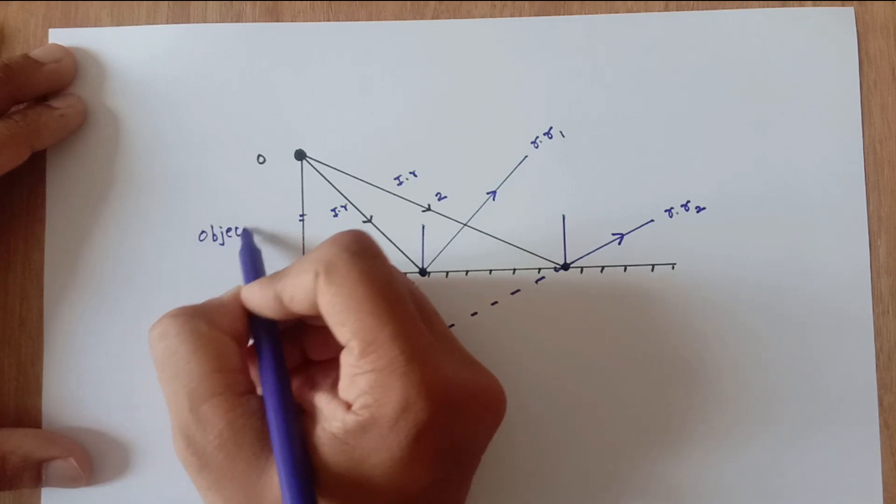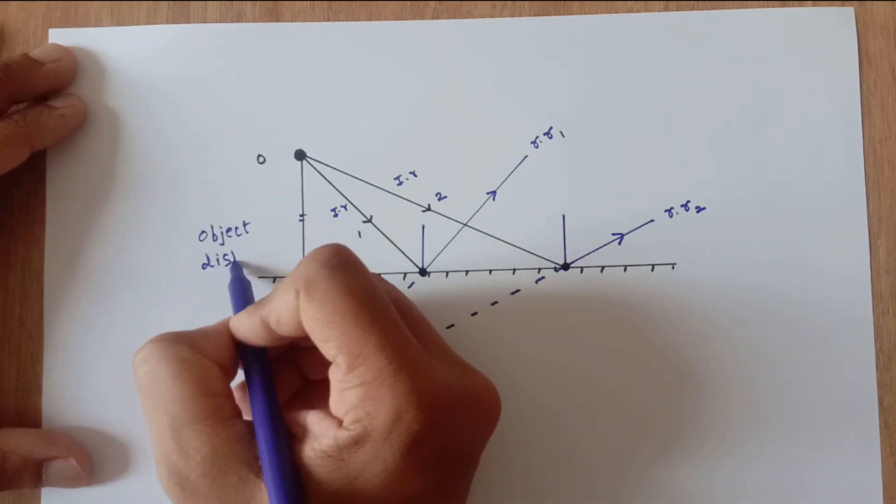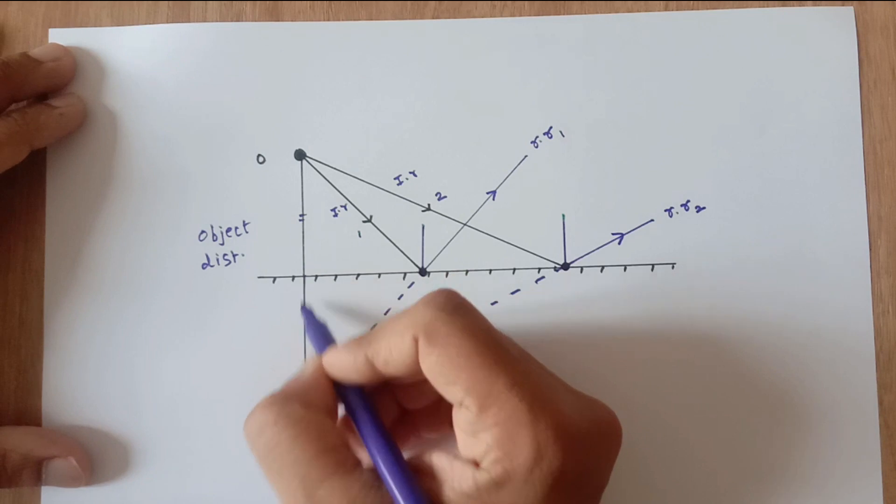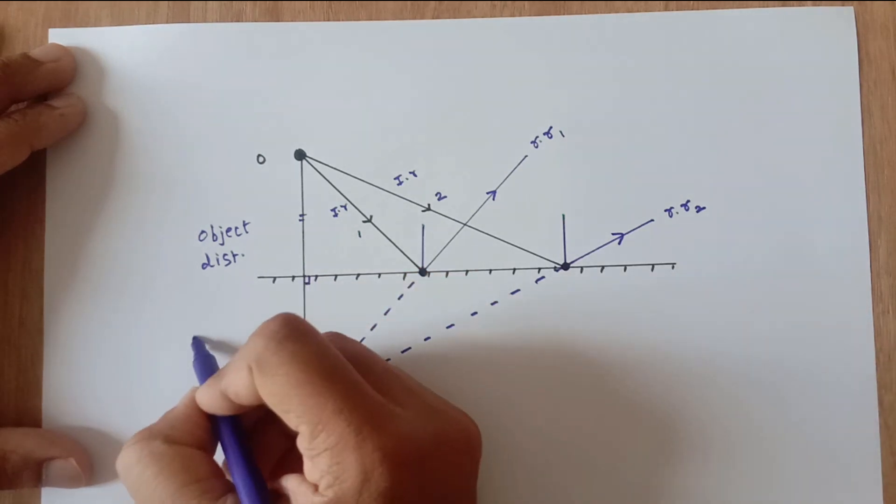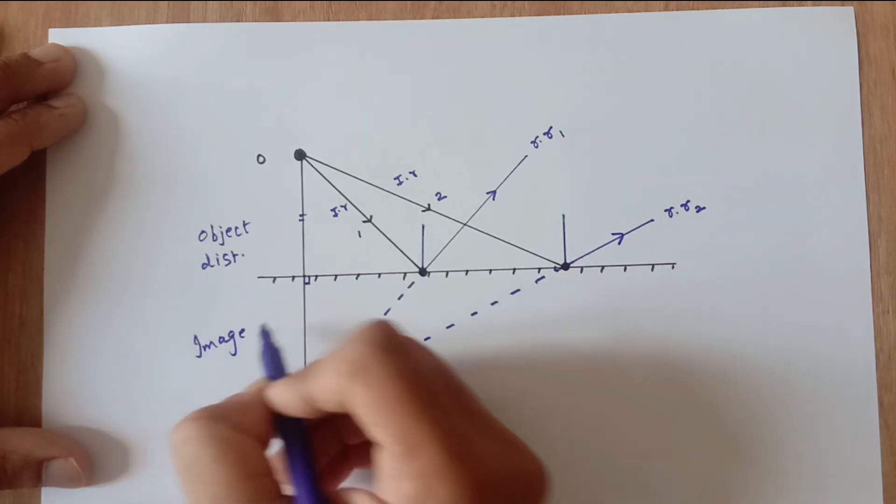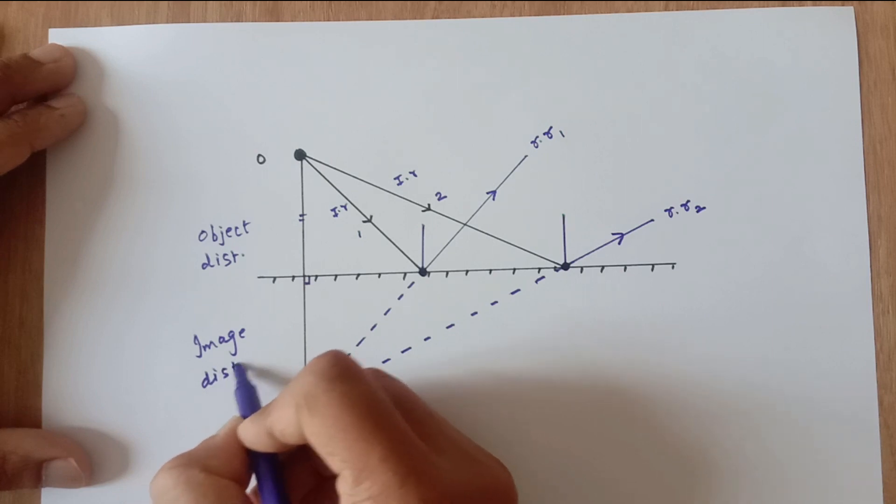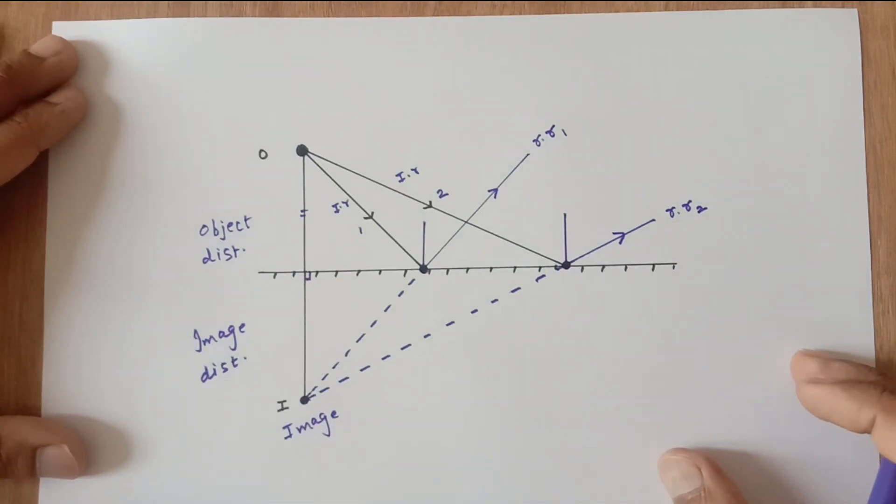And you can see very clearly that object distance is equal to the image distance as well. We have not used the protractor over here to verify the angles and even though the diagram looks very fair.